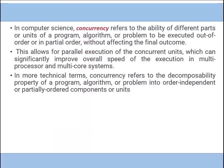In computer science, concurrency refers to the ability of different parts or units of a program, algorithm, or problem to be executed out of order or in partial order without affecting the final outcome. Concurrent computations, whether out of order or in order, do not affect the final outcome.